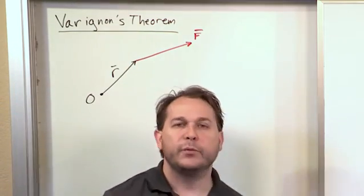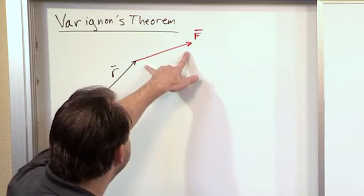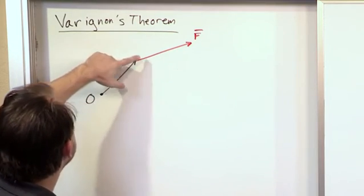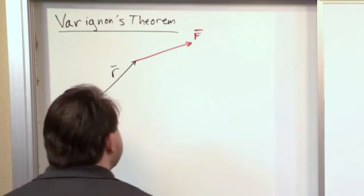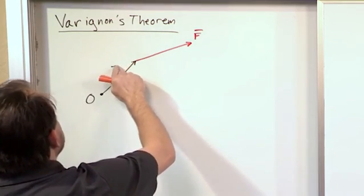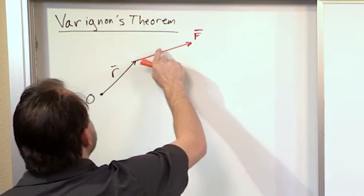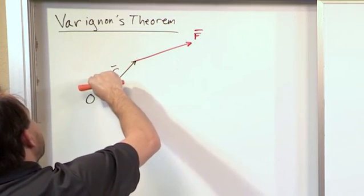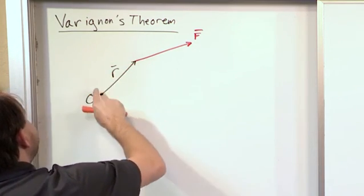Alternatively, we've talked about the fact that you could use the full force and find the perpendicular distance to the line of action. So this force's line of action is going like this. If I draw a dotted line this way, here is the line of action. The perpendicular moment arm to the line of action would be this.